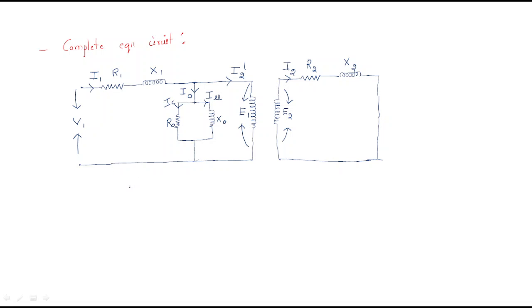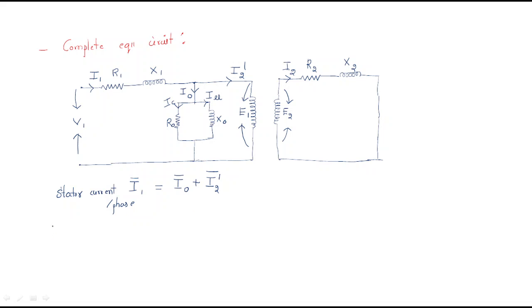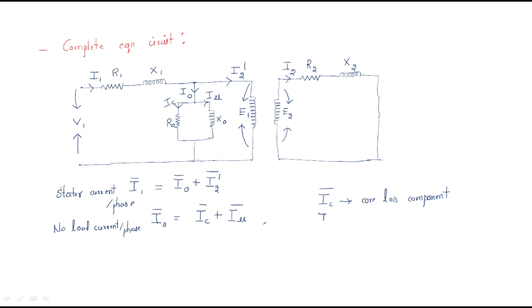In the complete equivalent circuit, I1 is the combination of I0 plus I2 dash. I1 is the stator current per phase, which is the combination of no-load current I0 and the referred rotor current I2 dash. I0 is the no-load current per phase, which is again the combination of IC (core loss component) and Imu (magnetizing component).